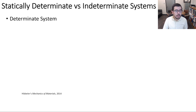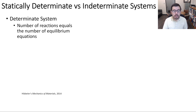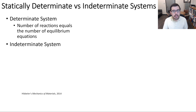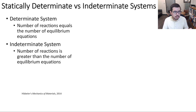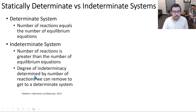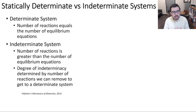In a determinate system, the number of reactions equals the number of equilibrium equations. Typically we're talking about three equilibrium equations: sum of forces in the x-direction, sum of forces in the y-direction, and the sum of the moments about a particular location on the structure. For indeterminate systems, the number of reactions is greater than the number of equilibrium equations. There's a term, degree of indeterminacy, which is the number of reactions that we can remove to get to a determinate system.